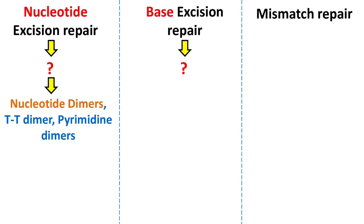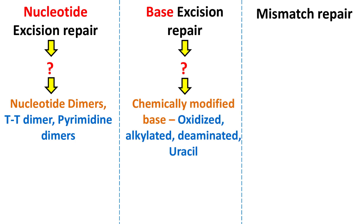Let's look at Base Excision Repair and ask: what type of base is it going to repair? The answer is that it repairs chemically modified bases, such as oxidized bases, depurinated bases, or the presence of unusual bases such as uracil in the DNA.